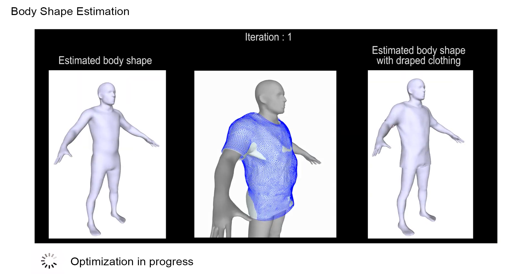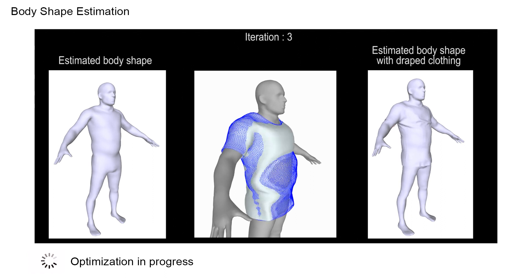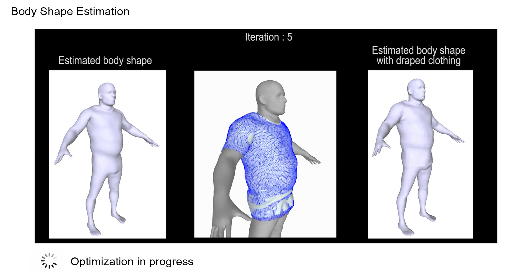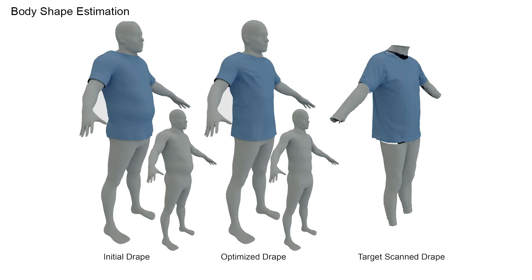The approach works regardless of the garment. Here we show body shape optimization with a t-shirt. More interestingly, we can recover body shape from a scanned subject. The scan is high resolution and the topology doesn't match the simulated shirt. Nonetheless, we quickly find a plausible body shape.